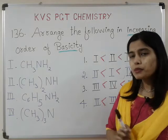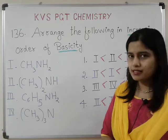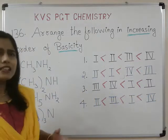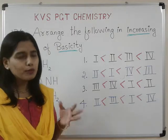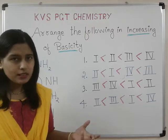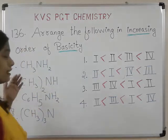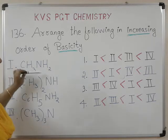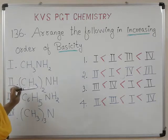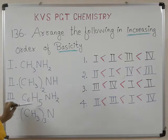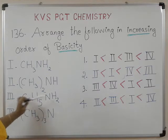First, we need to know what basicity is. Basicity is related to the donation of a lone pair of electrons — that decides the basic nature of any species. The options are: first, a primary amine CH₃NH₂; second, a secondary amine (CH₃)₂NH; third, an aromatic amine C₆H₅NH₂.